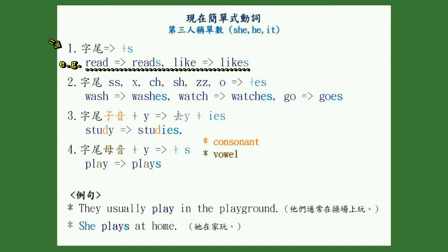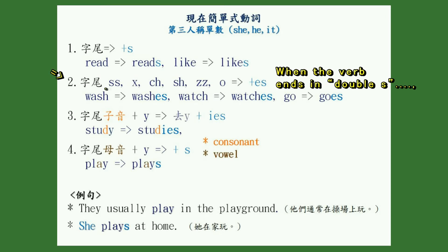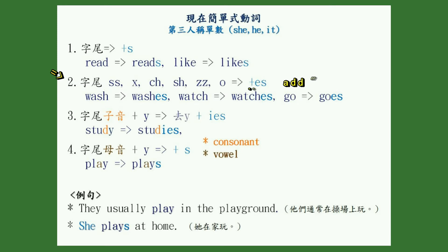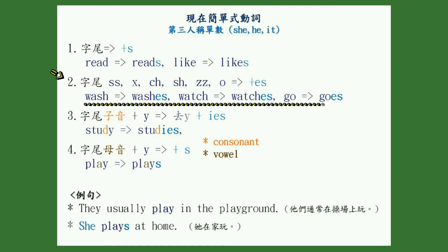When the verb ends in double S, X, CH, SH, double Z, or O, we add ES. For example: wash, washes; watch, watches; go, goes.